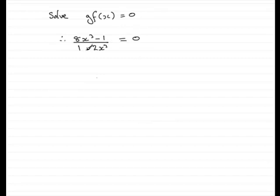So next, if I multiply both sides by 1 minus 2x cubed, then I would just have on the left 8x cubed minus 1 is equal to 0 times 1 minus 2x cubed, which is clearly going to be 0.